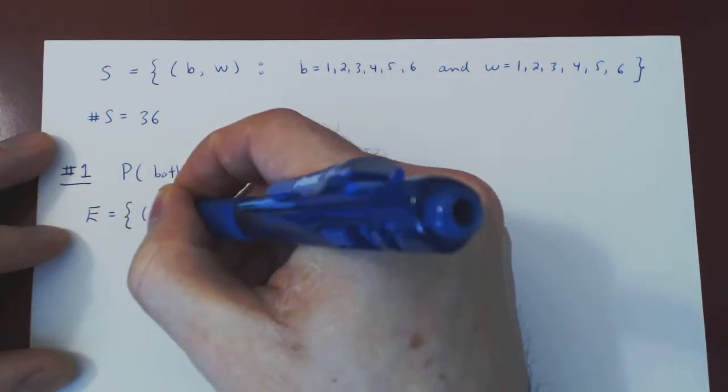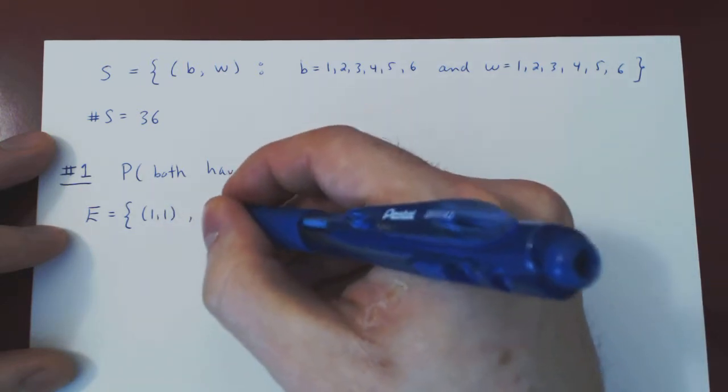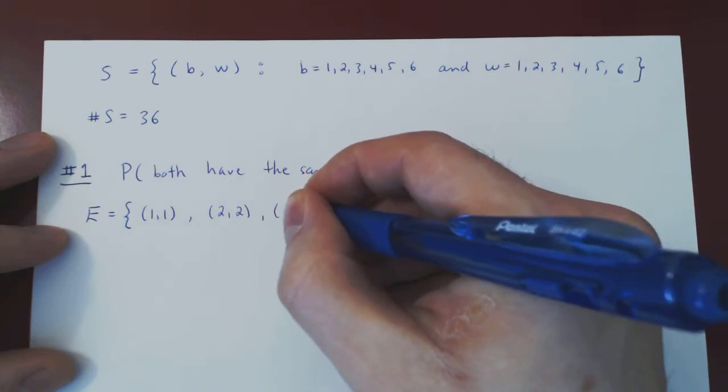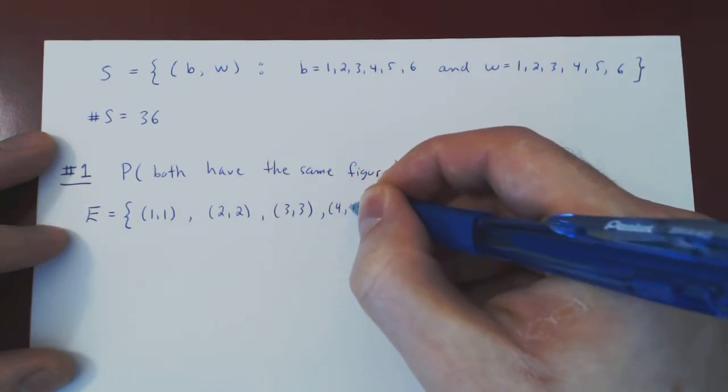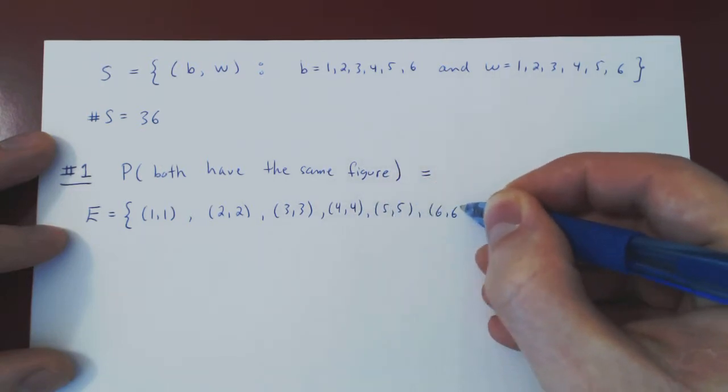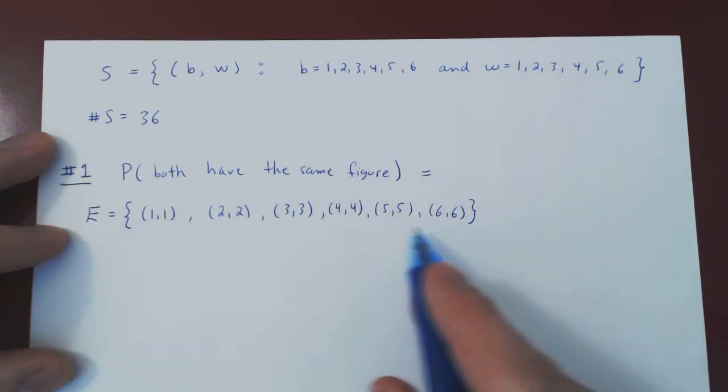It could be (1,1), so both come up 1. It could be (2,2), both come up 2. It could be (3,3), both come up 3. It could be (4,4), or (5,5), or (6,6). So that is the event that both have the same figure.